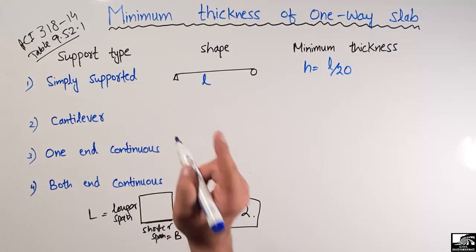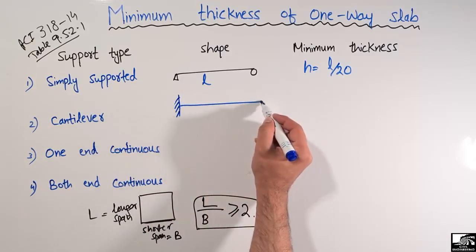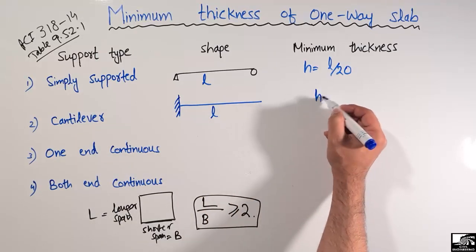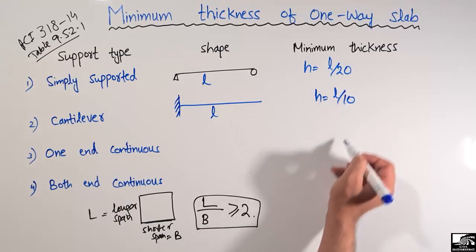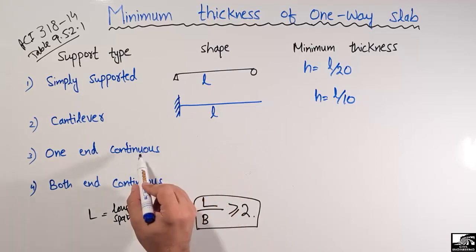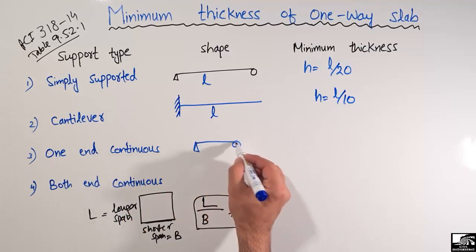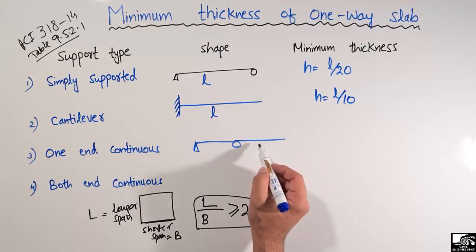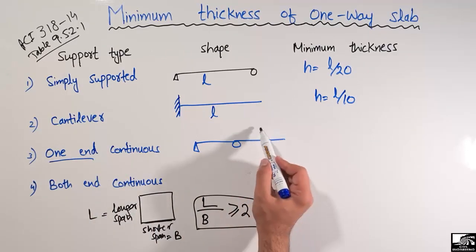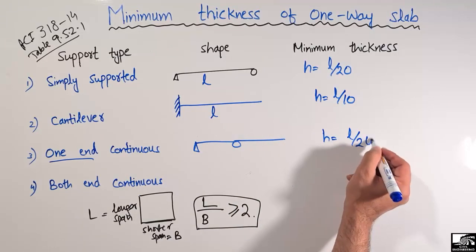Similarly, if it is a cantilever one-way slab with span length L, its minimum thickness will be equal to L divided by 10. If it is a one-end continuous one-way slab — meaning one end is free and one end is continuous — the minimum thickness for the one-way slab will be equal to L divided by 24.